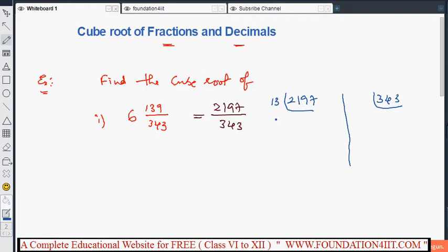For 2197, it's actually 13 table. From previous sum we have seen 13 table. If you take, it will be 169. Again 13, 169, 13. That is 13 into 13 into 13, that is numerator.